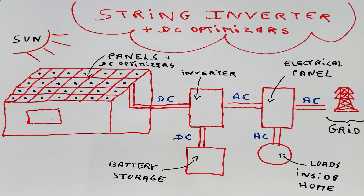Starting from the left-hand side, we see the roof-mounted solar panels plus the DC optimizers — one DC optimizer underneath each panel. These panels produce DC, or direct current, electricity, which is sent to a central inverter typically located on the ground, maybe outside the home or in the garage. The inverter converts that DC electricity into AC, or alternating current, electricity. That AC electricity is sent to the electrical panel in the home and distributed to power various loads — lights, appliances, and so on. If we produce more AC electricity than we need, the excess is sent to the grid.